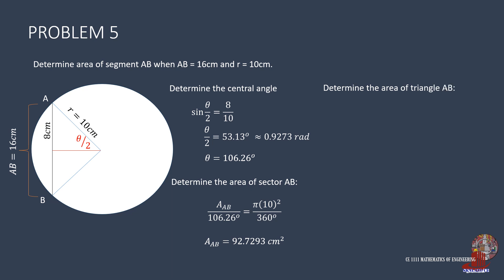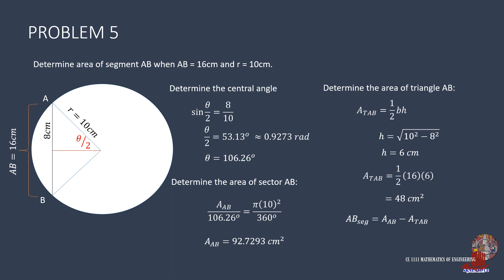From the sector, deduct the area of the triangle using half base times height. Using the triangle with legs of 8 and 10, Pythagorean theorem gives h as root of 10 squared minus 8 squared, giving 6 cm. The area of the triangle is half of 16 times 6, resulting in 48 square cm. The area of segment AB is 92.7293 less 48, giving 44.7293 square centimeters.